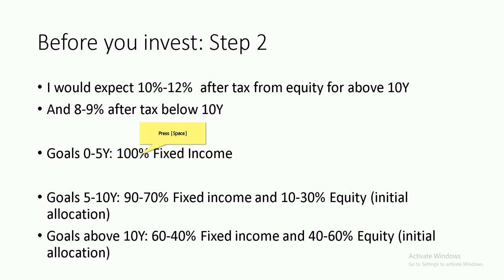I would expect about 10–12% post-tax return from equity over about 10 years, and a little below 10% for periods below 10 years. As I've discussed in a recent video — the link is in the description box — for any goal within five years, use 100% fixed income. So that's your asset allocation: 0% equity and 100% fixed income.